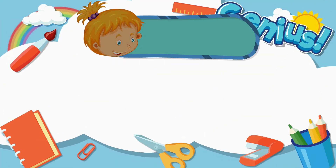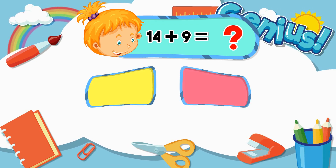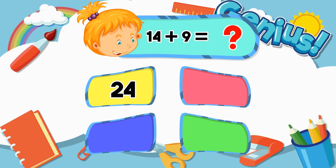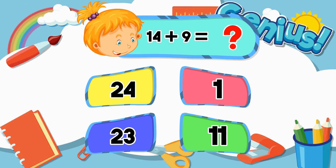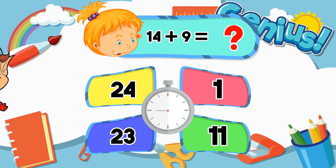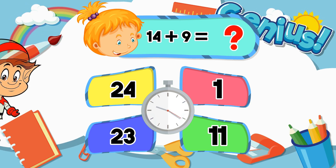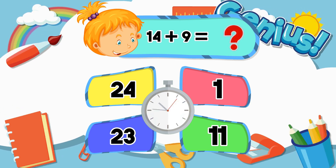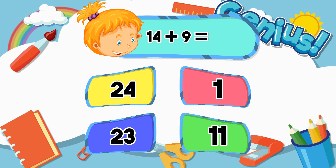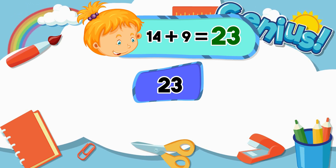What is fourteen plus nine? Twenty-one, twenty-three, eleven. Twenty-four.